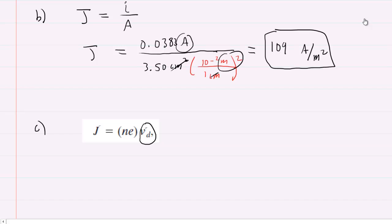Drift speed is indicated by V subscript D. We need to solve this equation for V subscript D. To do that we'll divide by the quantity NE. The NEs cancel out on the right hand side, so we can see that the drift speed equals the current density divided by NE.